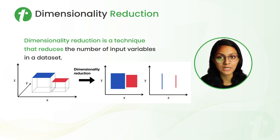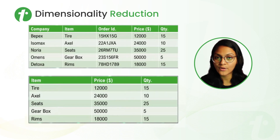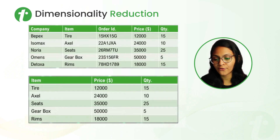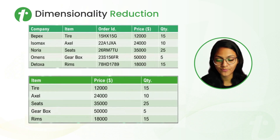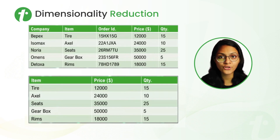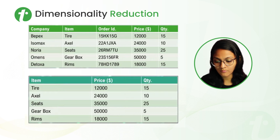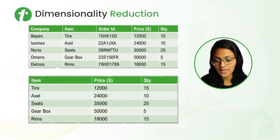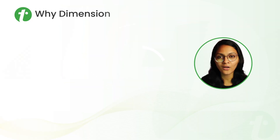These cuboids become rectangles. Let's understand Dimensionality Reduction with an example. We have a dataset with 5 features: Company, Item, Order ID, Price, and Quantity, and we are using these attributes for predicting future sales. After correlation analysis, we observe that only 3 features are relevant: Item, Price, and Quantity. So we reduce the dataset to only 3 attributes, making it a 3-dimensional dataset.